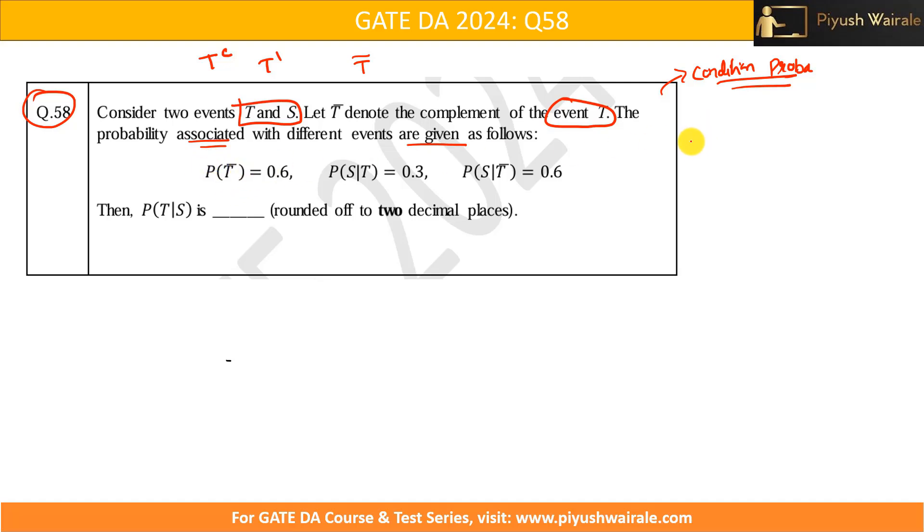So, here it is given to us that probability of complement of T is what? 0.6. And we already know that probability of complement of T is equals to 1 minus probability of T. So, from this, we can find out probability of T is what? 1 minus 0.6, that is 0.4. So, I got the probability of T here.